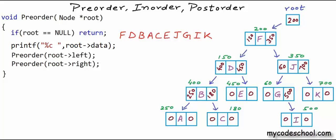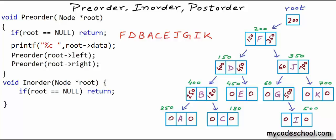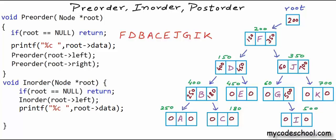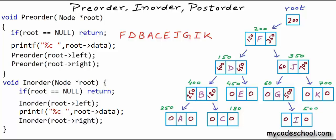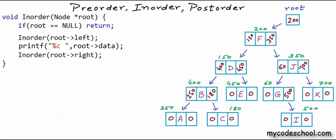That is preorder traversal. Code for inorder and postorder is very similar. In inorder traversal, the base case is the same: if root is null, return. If root is not null, I first visit the left sub-tree with a recursive call, then visit the root by printing its data, then visit the right sub-tree with another recursive call. Inorder traversal of this example tree gives the elements in sorted order, because this tree is also a binary search tree — inorder traversal of a BST gives elements in sorted order.